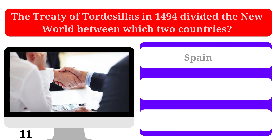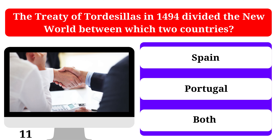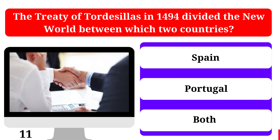The Treaty of Tordesillas in 1494 divided the New World between which two countries? Spain, Portugal, or Both. The correct answer is Both.